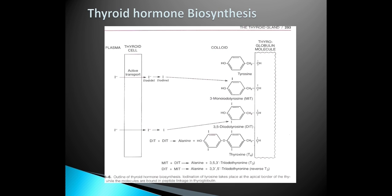Iodine is converted to iodide and binds in the colloid to form monoiodotyrosine and diiodotyrosine. Monoiodotyrosine plus diiodotyrosine forms triiodothyronine, which is T3. Diiodotyrosine plus monoiodotyrosine forms reverse T3, and DIT plus DIT forms T4 (thyroxine).